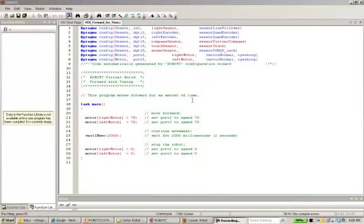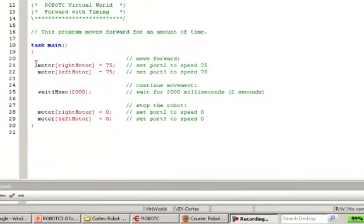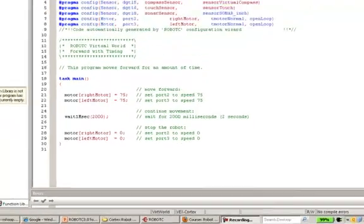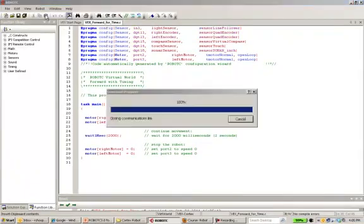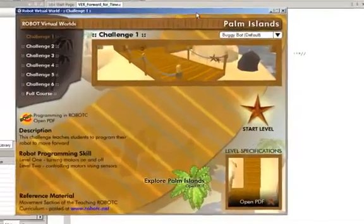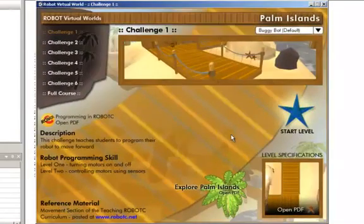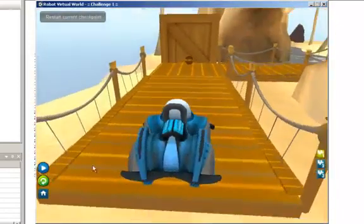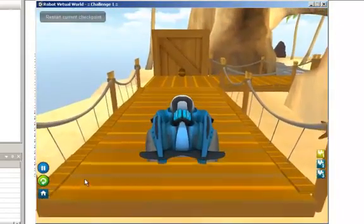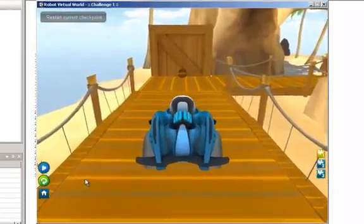Welcome back. So we ended the lesson by executing this code where we turned the motors on at 75 power, waited for two seconds, then we stopped. And I'll go and I'll compile this, and you will remember that we were at level one, and we let this run for two seconds, and then the robot stopped.